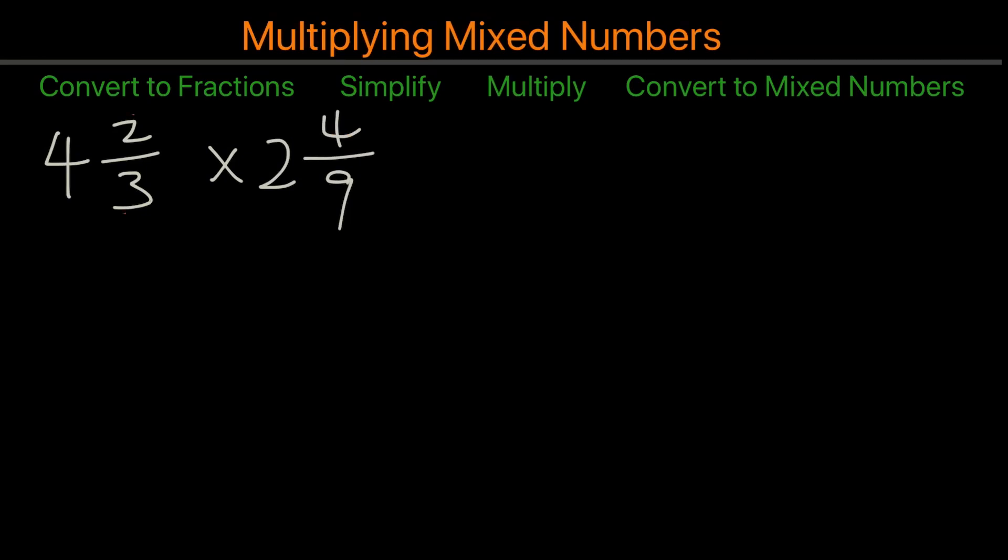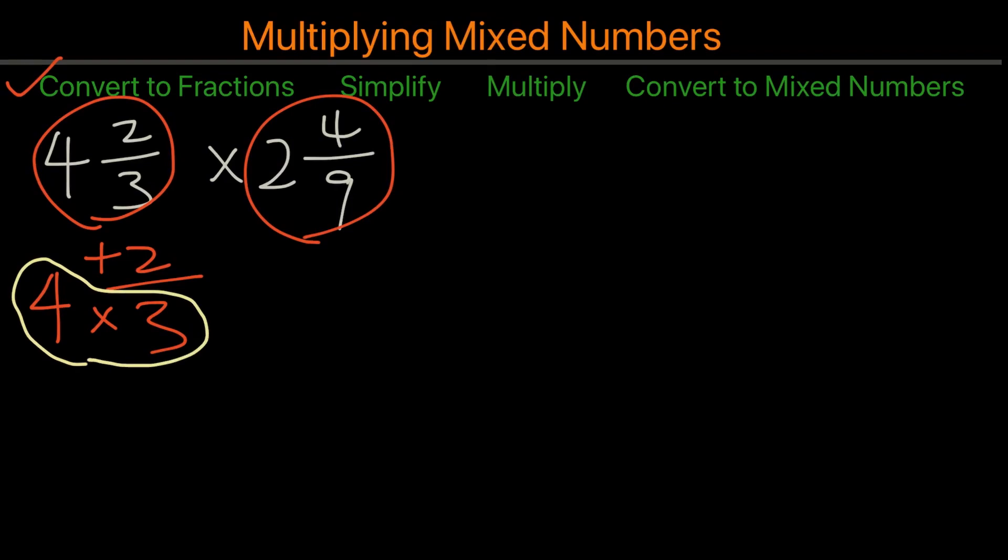In this example, we need to convert this mixed number and this mixed number to fractions. That's our first step. We will take the 4 times the 3 and then plus the 2. So the first step is to take 4 times the denominator and then add the numerator after. So if we do that, it will be 4 times 3 is 12, 12 plus 2 is 14. So we will end up with 14, and then we would leave the denominator the same, which is 3. So it's 14 over 3.